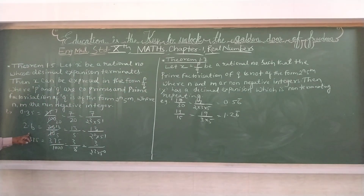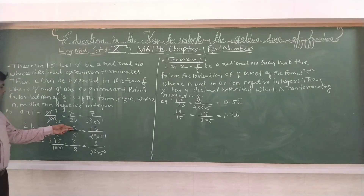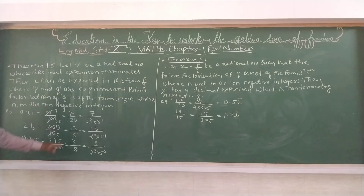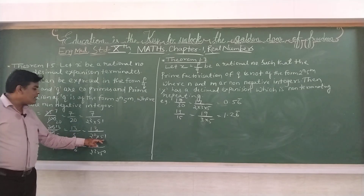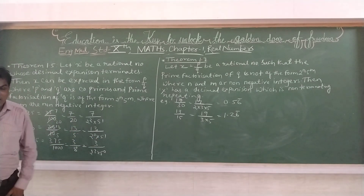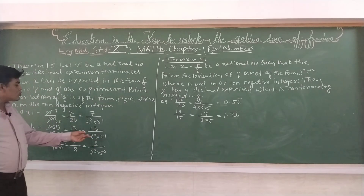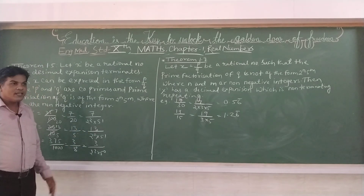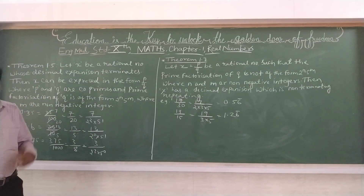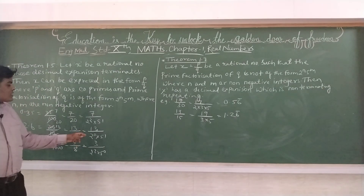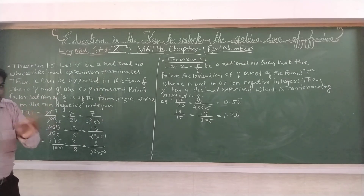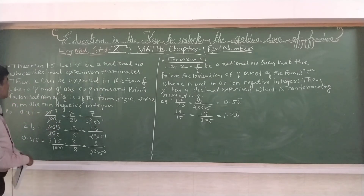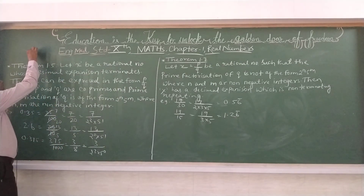Like this, 2.6 is equal to 26 upon 10. Isko agar reduce karenge to 13 upon 5 hoga. Yah 5 diya hai lekin hum 2^n bhi find karna hai. 2^n kab hoga? Hum 2 to the power 0 le lenge — kyunki kisi bhi number ka power 0 ho to 1 hota hai. To yahan par 2^0 into 5^1.